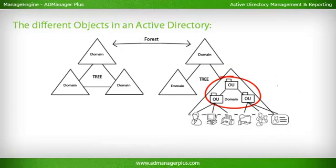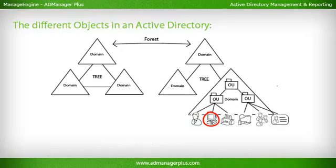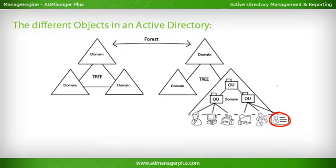Organizational Unit (OU) is a container or administrative boundary within a domain. It organizes the domain's objects into groups for administrative purposes or as per requirement. User is an individual person who is part of the organization or network. Computer refers to individual workstations or servers in a network. Printer and Shared Folder are shared across a network or organization domain. Group consists of users and computers. Contact is an individual who is related to the organization but not part of it — for example, a supplier or customer.